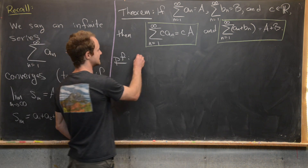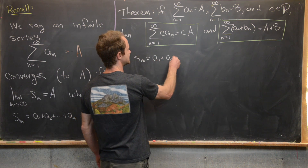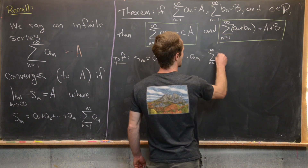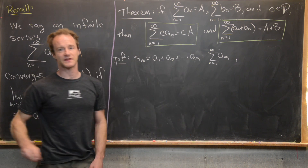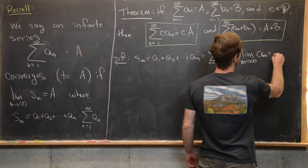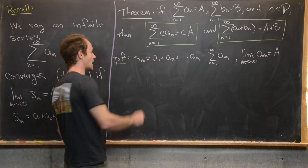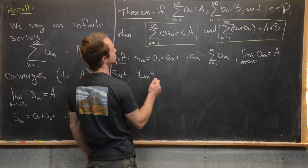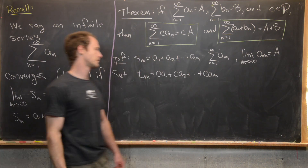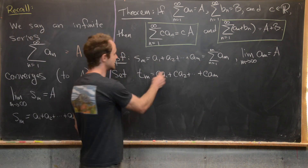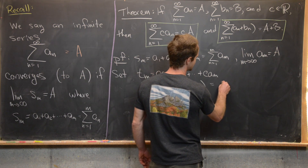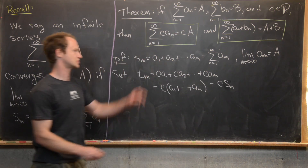Let's do the first proof. We'll set s sub m equal to a1 plus a2 all the way up to a m — in other words, the sum as n goes from one to m of a sub n. Given that the sum of a sub n equals a, we know that the limit of this sequence of partial sums equals a. Now notice if we set t sub m equal to c times a1 plus c times a2 all the way up to c times a m, we can use the finite distributive rule to factor the c out, giving c times (a1 plus up to a m), which equals c times s sub m.